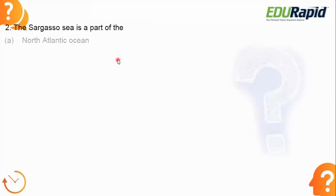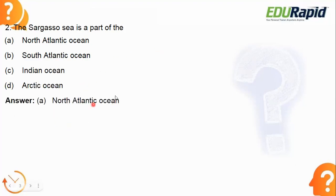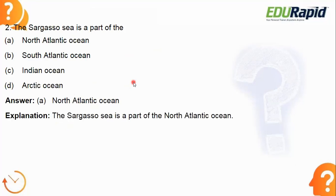Next question: the Sargasso Sea is a part of which ocean — North Atlantic Ocean, South Atlantic, Indian Ocean, or Arctic Ocean? The answer is option A — North Atlantic Ocean. The Sargasso Sea is part of the North Atlantic Ocean. As we studied, it is an ocean gyre covered by four different ocean currents, specifically in the North Atlantic Ocean.